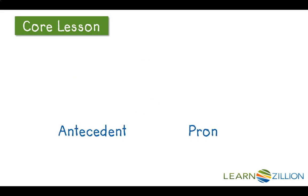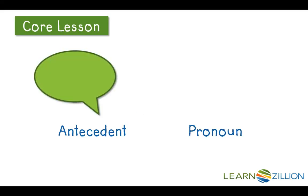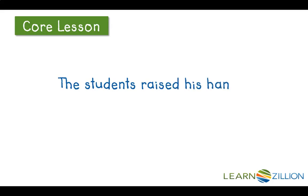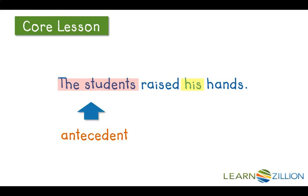Antecedents and pronouns also need to agree in terms of number. A singular pronoun would agree with a singular antecedent. Here we have a plural antecedent — 'the students' — so to agree, the pronoun would have to be plural, like 'their.' Consider: 'The students raised his hands.' The antecedent is 'the students,' and our pronoun is 'his.'